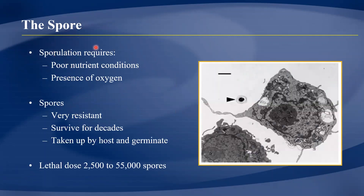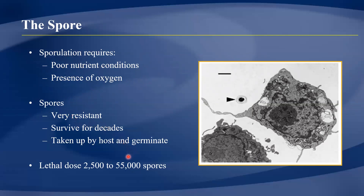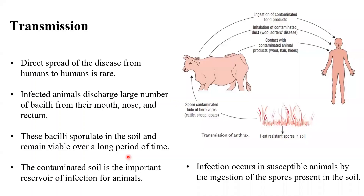Spores are formed through sporulation, where the vegetative form converts into the spore form, allowing the bacteria to survive in very harsh conditions with poor nutrients. Spore formation only occurs in the presence of oxygen — for example, when a carcass is cut open. Spores are very resistant and can survive for decades. To develop the disease, a person must receive a substantial dosage, estimated at around 50,000 spores.